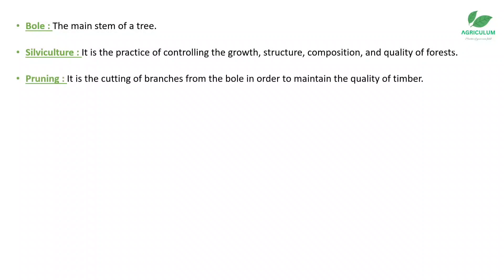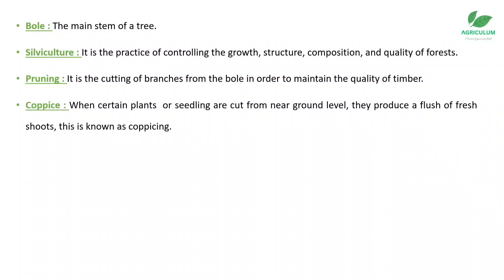Pruning is the cutting of branches from the bole in order to maintain the quality of timber. Coppicing is when certain plants or saplings are cut from near ground level and they produce a flush of fresh shoots.